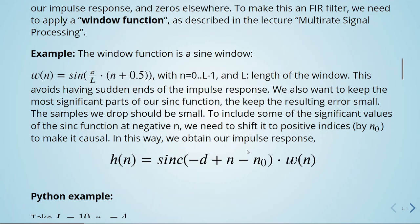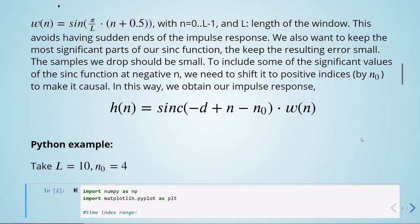So in this way, we will obtain the following impulse response. So it's our sinc function shifted by n0, and then we will apply a window, a sinc window, so it's a multiplication in the time domain.